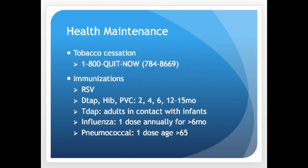Under health maintenance immunizations for children, consider RSV, DTaP, HIB, and PCV — all common pediatric immunizations given at regularly scheduled intervals. RSV may be less common in Hawaii but was given to premature infants on the mainland in winter months. Tdap is recommended for all adults who have contact with infants, including daycare workers, healthcare workers, grandparents, and parents — it boosts tetanus, diphtheria, and also pertussis. Influenza vaccination is recommended annually for those over six months old, and the pneumococcal vaccine for elderly patients over 65, usually as a one-time dose.